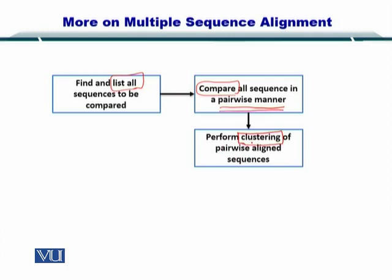Once you have performed pairwise alignments, you move towards clustering. Clustering is essentially a strategy to make pairs of the most similar sequences. For example, if you have four sequences and want a multiple sequence alignment, the two sequences that are closest will form the first pair, and the other two that are more similar to each other will form another pair.